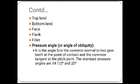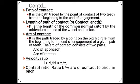The pressure angle is the angle between the common normal to two gear teeth at the point of contact and the common tangent at the pitch point. The standard pressure angle is approximately 14 to 20 degrees. The path of contact is the path traced by the point of contact of two teeth from the beginning to the end of engagement.